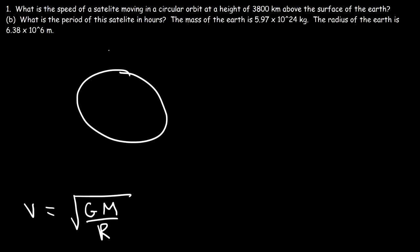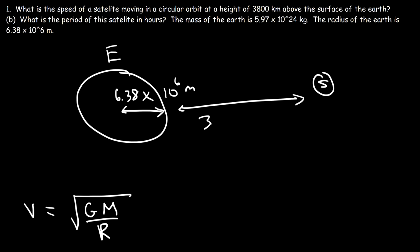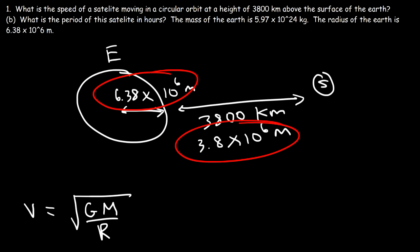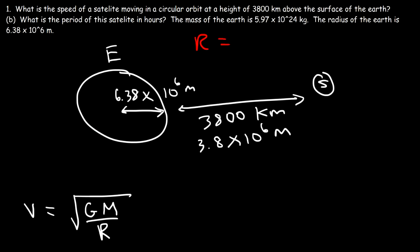Here is the Earth and the satellite. First we have the radius of the Earth, which is 6.38 times 10 to the 6 meters, and we have the height of the satellite above the surface, which is 3,800 kilometers. To add these two values we need matching units — one kilometer is a thousand meters, so 3,800 kilometers equals 3.8 times 10 to the 6 meters. So R is the sum: 6.38 times 10 to the 6 plus 3.8 times 10 to the 6, which equals 1.018 times 10 to the 7 meters.